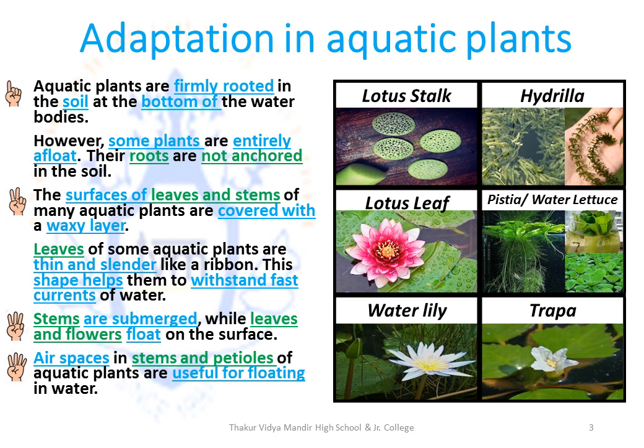The stems of aquatic plants are submerged while their leaves and flowers float on the surface. As they have to float, the leaves of aquatic plants are usually flat. There are air spaces in the stems and petioles of aquatic plants that are used for floating in water. Petioles are basically the thin stick-like outlets of the leaf which join the leaf to the stem.